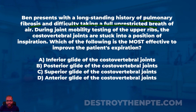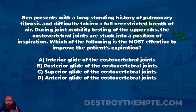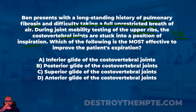During joint mobility testing of the upper ribs — ribs one through six — we find that the costovertebral joints are stuck into a position of inspiration. That's very important, because I was expecting them to say maybe stuck into expiration, but no — they're stuck into inspiration. The final part of the question asks which of the following is most effective to improve the patient's expiration, getting the joints into an expired position.